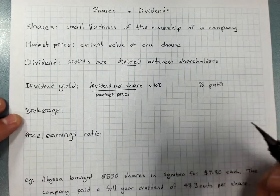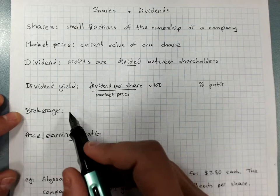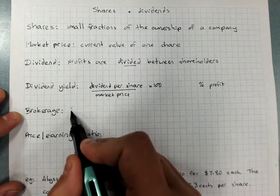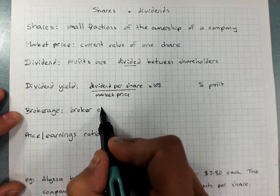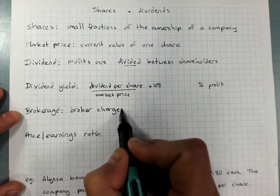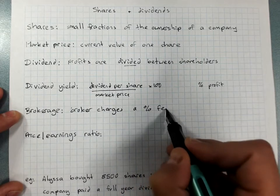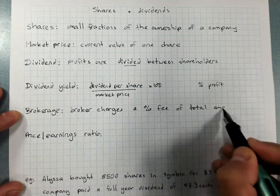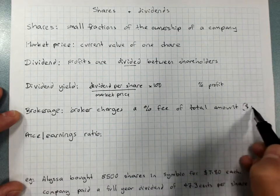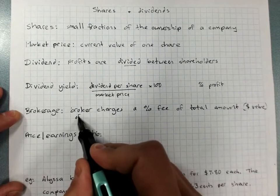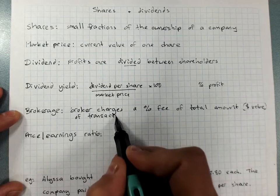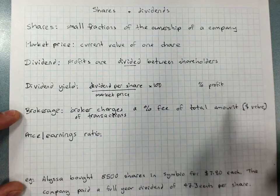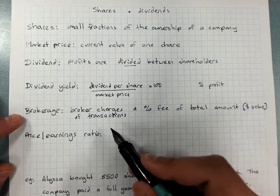Brokerage. People don't usually buy and sell shares themselves. They pay a broker who does the deals for them and the broker charges a fee, a percentage fee, of the total sales that they do for you, the total dollar value. So if you buy shares for a thousand dollars in total, you'll pay a certain percentage of that thousand dollars to your broker.